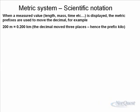Moving on to the next tool, that's scientific notation. When a measured value, whatever you're measuring, length, mass, time, etc., is displayed, the metric prefixes are used to move the decimal. So 200 meters, we're not using scientific notation there, that's called standard notation. We move the decimal three places to the left and at the same time we change the unit from meters to kilometers. The kilo means 10^3, so that means we can move the decimal three places.